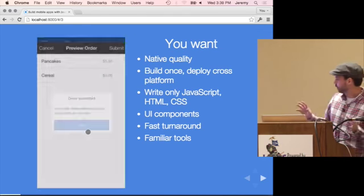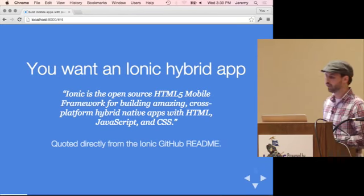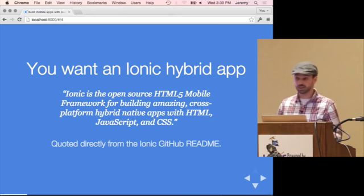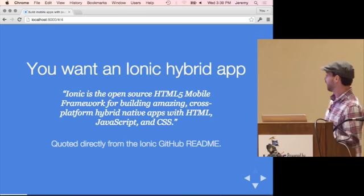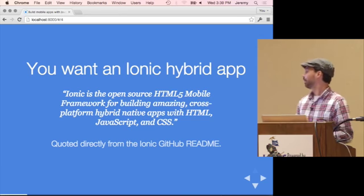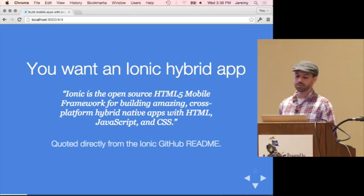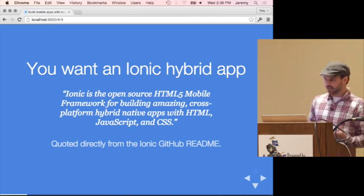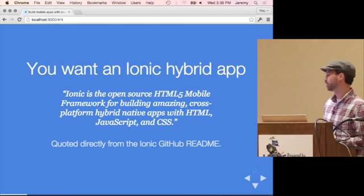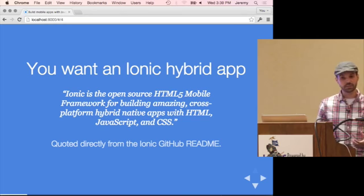As you can read from Ionic's GitHub readme, Ionic is the open source HTML5 mobile framework for building amazing cross-platform hybrid native apps with HTML, JavaScript, and CSS. If that's not a mouthful, I don't know what is. There's a lot in it, so let's dissect that and learn what a hybrid app actually is, so you understand what Ionic and the other technologies do together to create your mobile app.